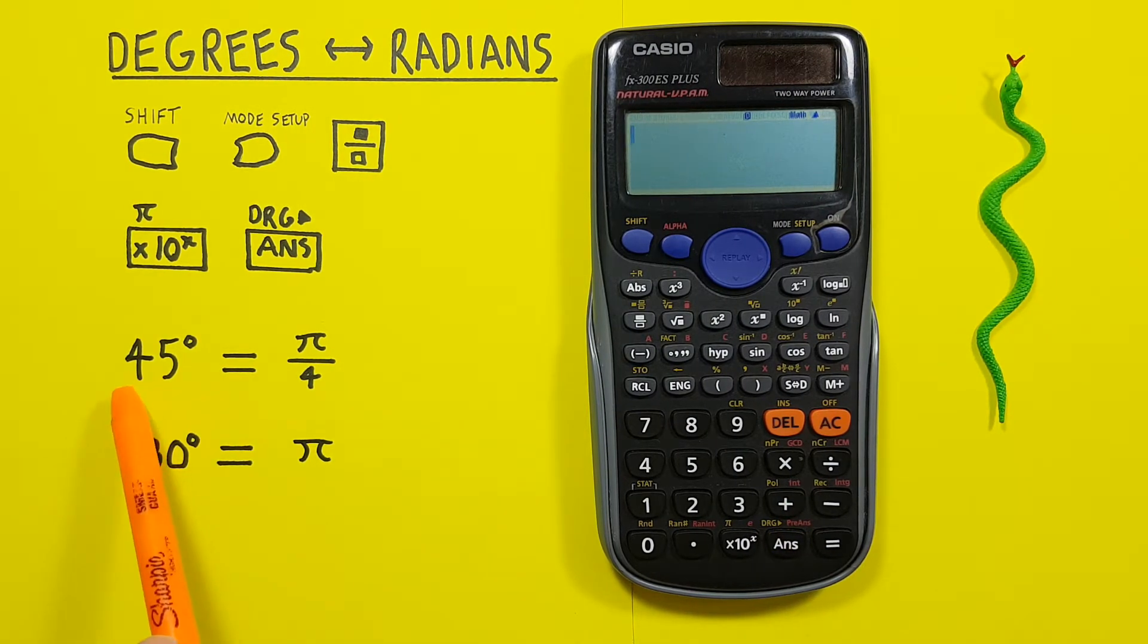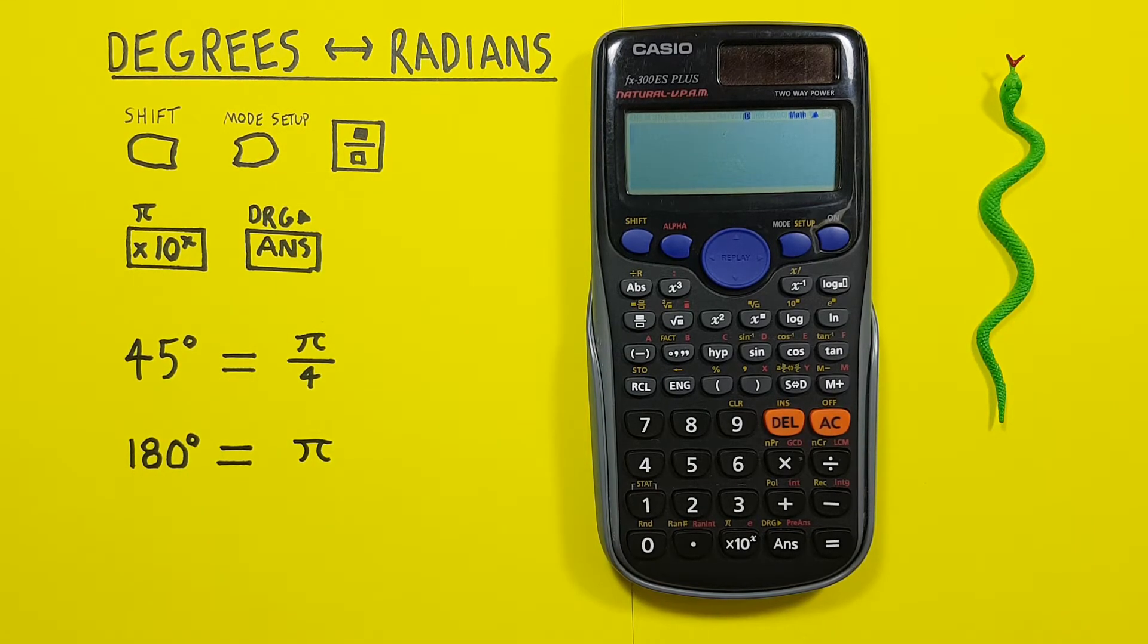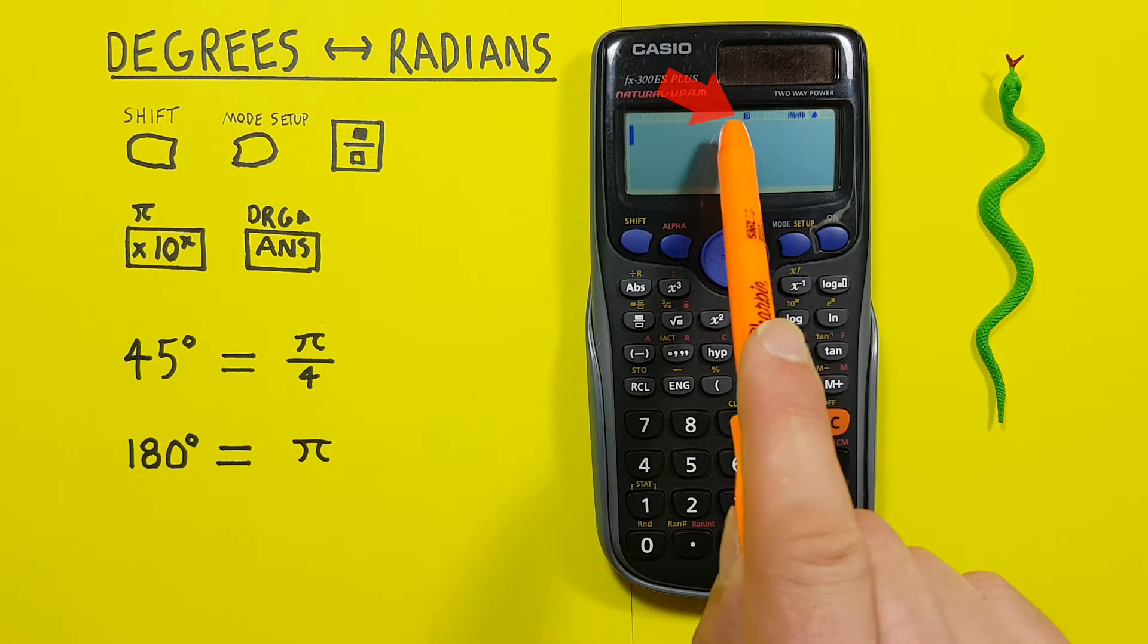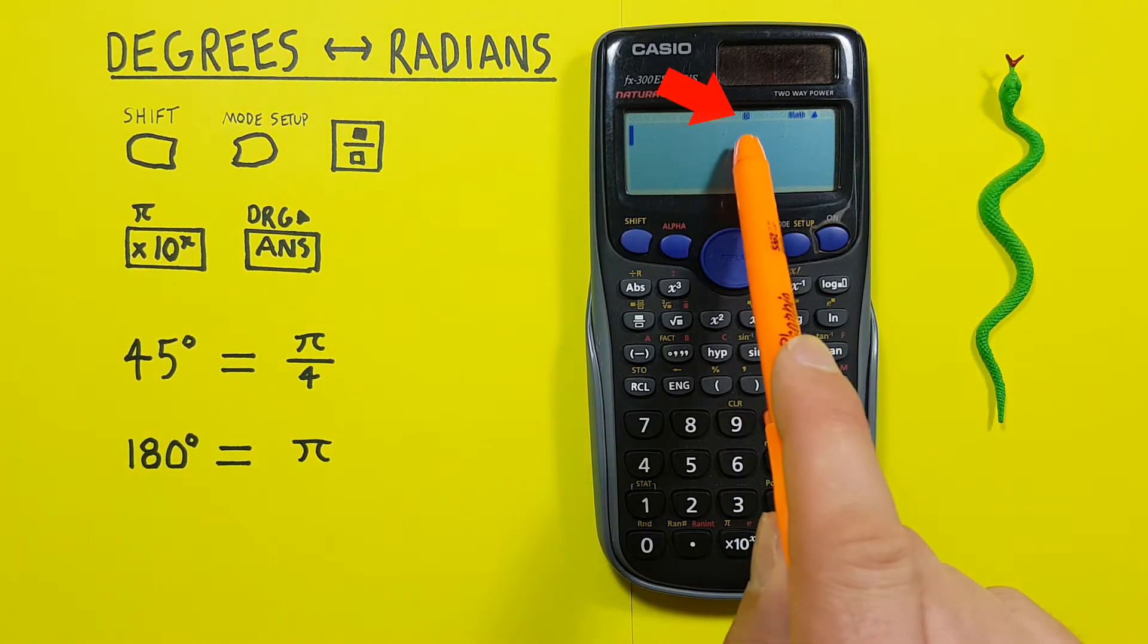Let's say we were given 45 degrees and wanted to convert that to radians. To do this, we need to first set our calculator to the mode we want our results in. Since we're going to radians, we want to set our calculator to radians mode. We can see at the top of the screen there's a D, which says our calculator is in degrees mode.